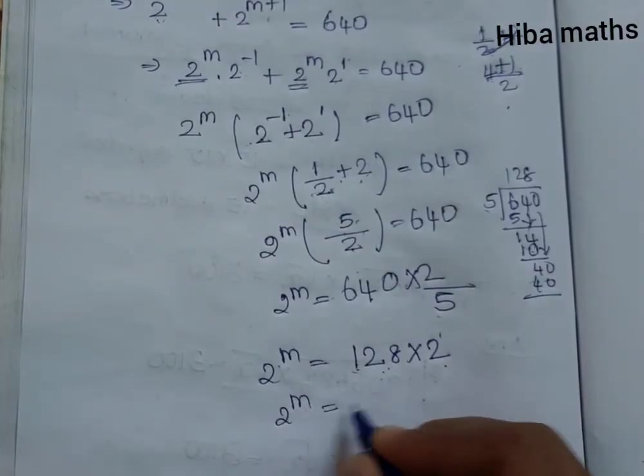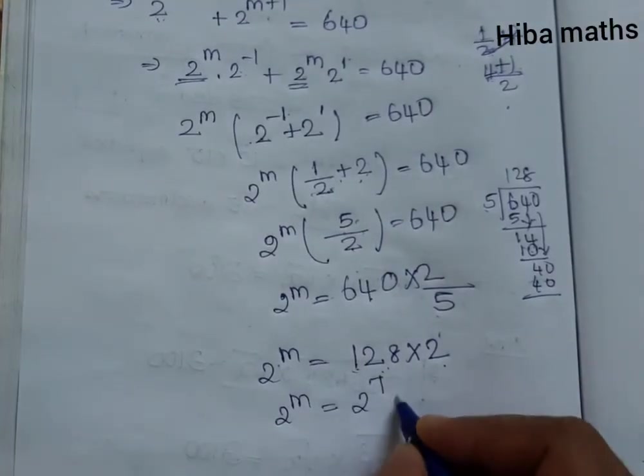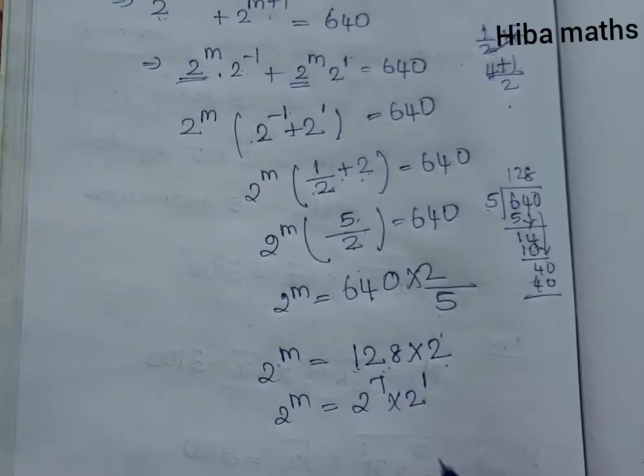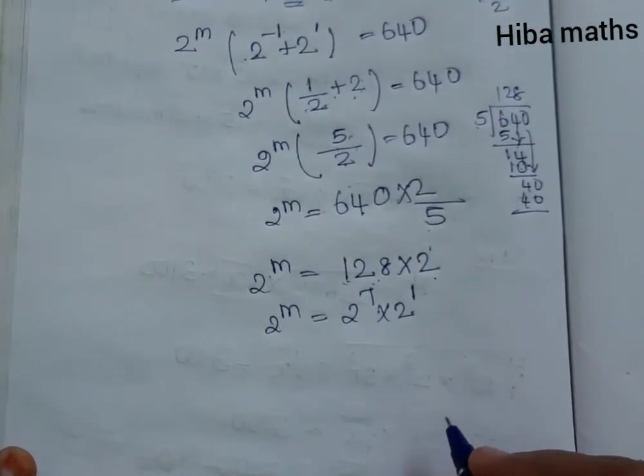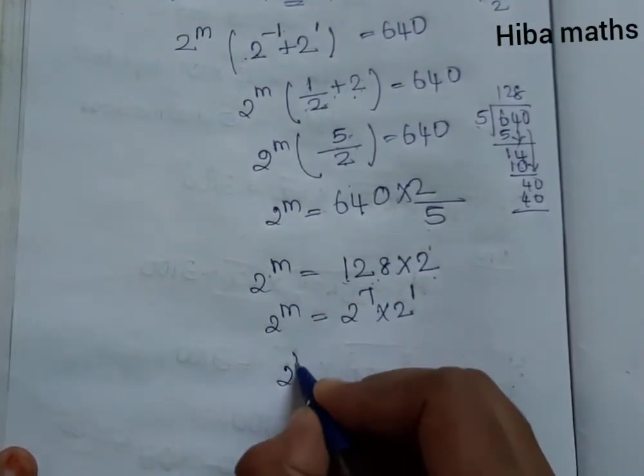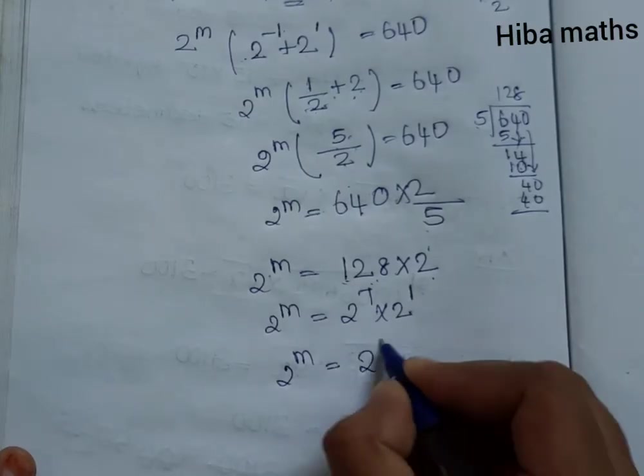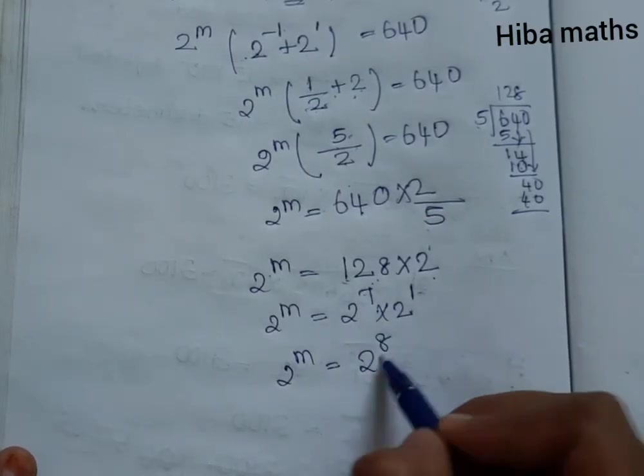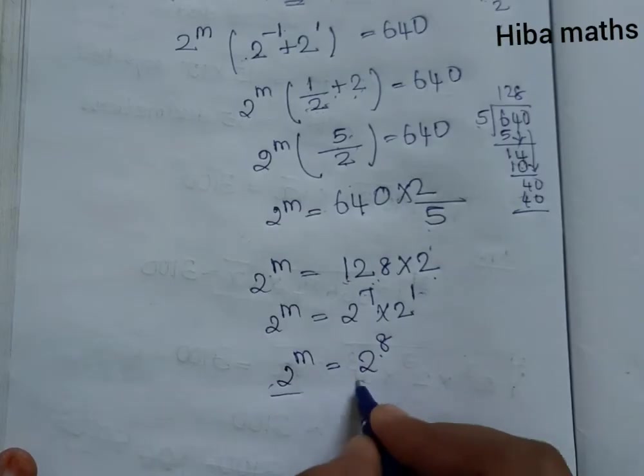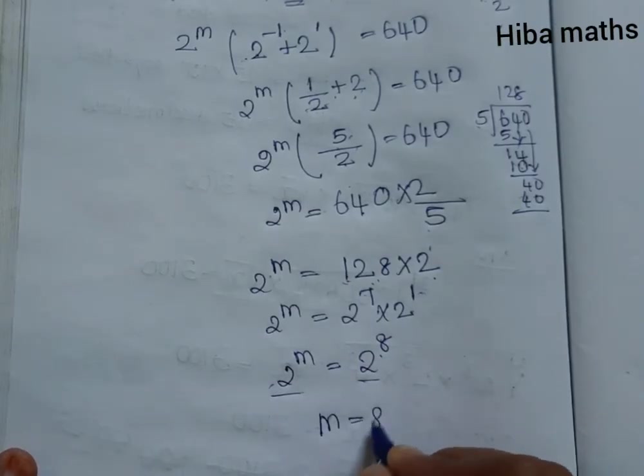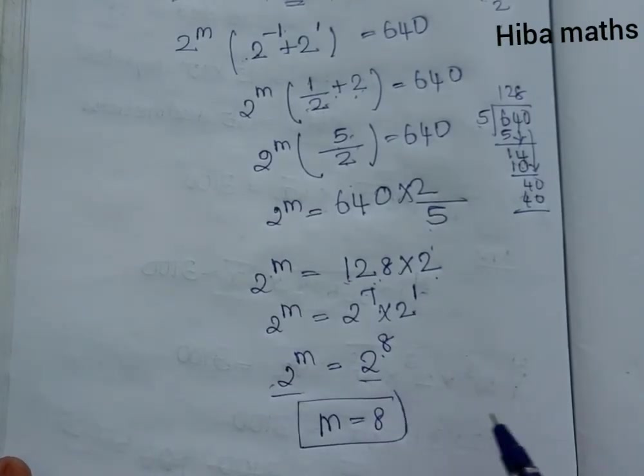Since 2^m = 128 × 2 = 2^7 × 2^1, we add the exponents: 2^m = 2^(7+1) = 2^8. Therefore, m = 8.